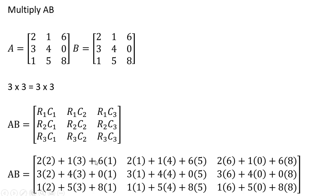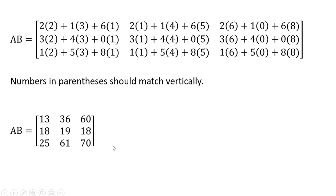The first element, row 1 column 1, is 2 times 2 plus 1 times 3 plus 6 times 1. Moving right to row 1, column 2, the calculation is 2 times 1 plus 1 times 4 plus 6 times 5 — working with the middle column of matrix B. The last element in the first row uses row 1 of matrix A and column 3 of matrix B: 2 times 6, 1 times 0, and 6 times 8. Following that procedure, to complete the remaining calculations we get our answer.